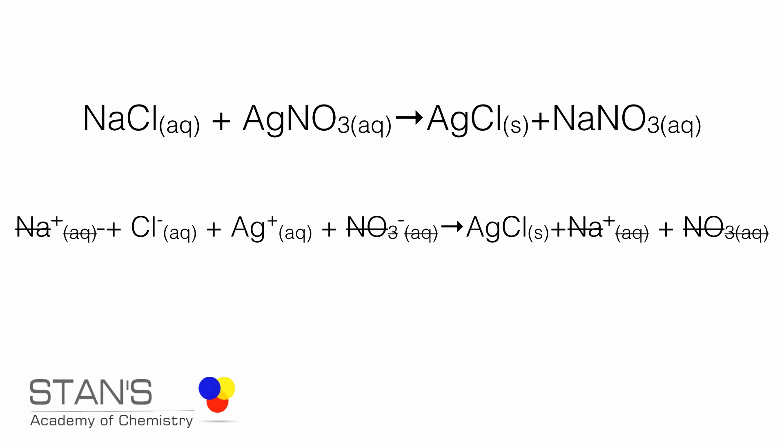So, sodium chloride changes into Na+ and Cl-. Silver nitrate changes into Ag+ and NO3-. Sodium nitrate again is soluble in water because it's sodium and nitrate changes into Na+ and NO3-. But silver chloride has low solubility. Therefore, it will remain as a solid or it will be a precipitate.